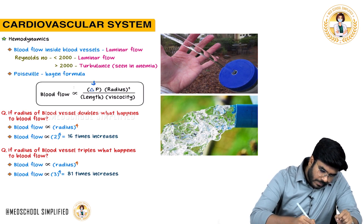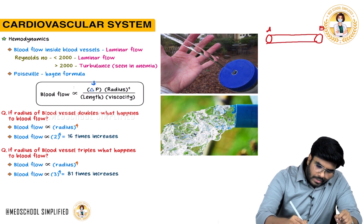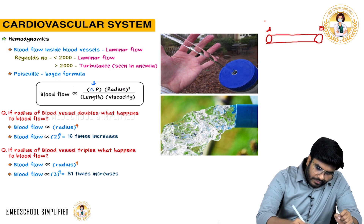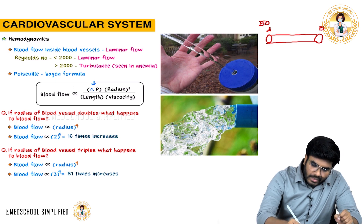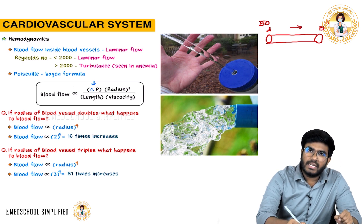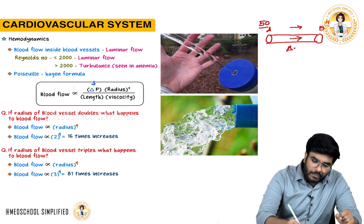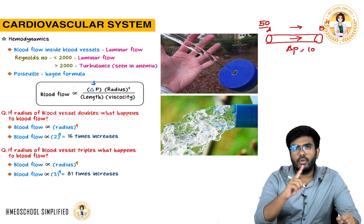Let's talk about the pressure difference. Imagine that this is a blood vessel with point A and point B. The pressure at point A is 50 and the pressure at point B is 40. Will blood move or not? The delta P is 10. Fluid will move from high pressure to low pressure — no doubt. The delta P value is 10.